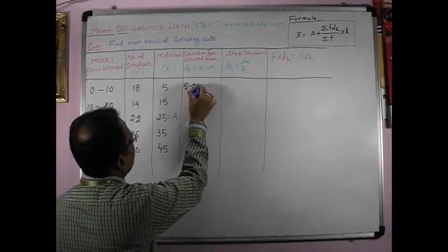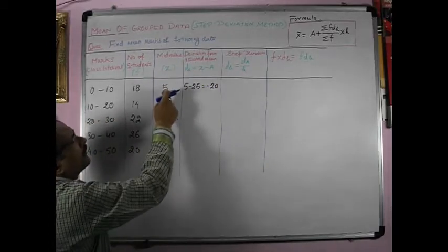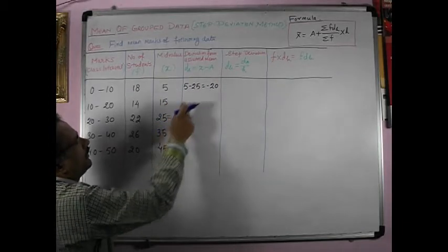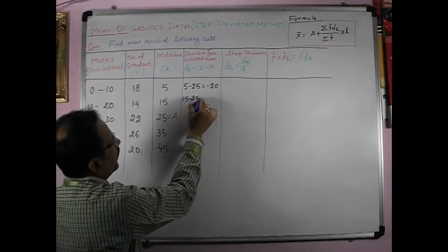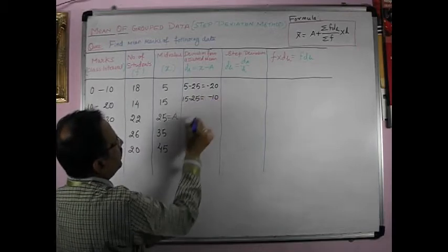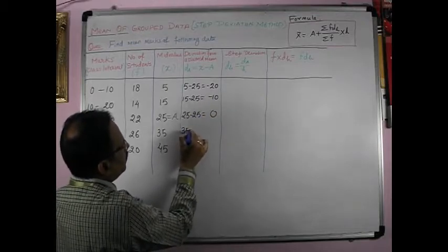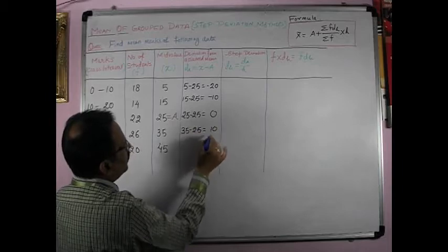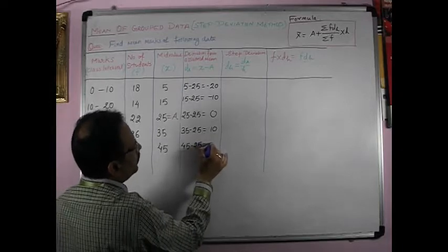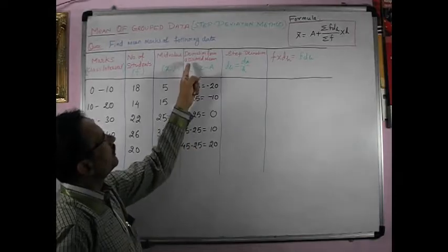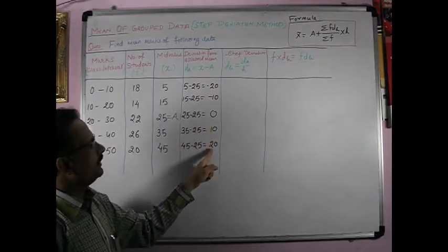Now, 5 minus 25 is equal to minus 20. 5 is x, x is 5, and 25 is A. 5 minus 25 minus 20. 15 minus 25 is equal to minus 10. 25 minus 25 is equal to 0. 35 minus 25 is equal to 10. 45 minus 25 is equal to 20. So, we have got this deviation from assumed mean: minus 20, minus 10, 0, 10 and 20.